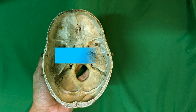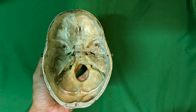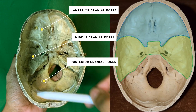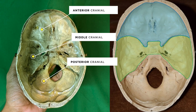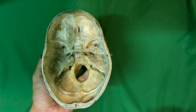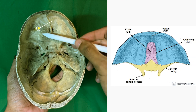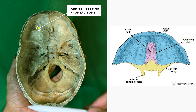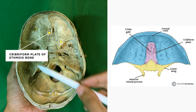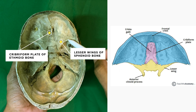The skull base consists of three cranial fossae: anterior, middle and posterior fossa. The anterior cranial fossa is formed by the orbital part of the frontal bone, the cribriform plate of the ethmoid, the lesser wings, and the anterior part of the body of the sphenoid.